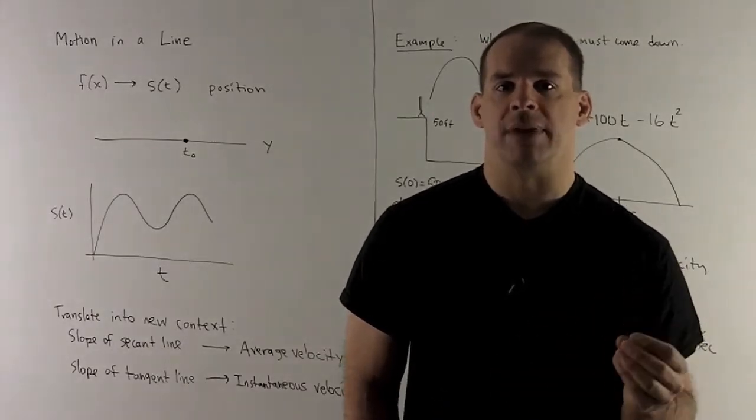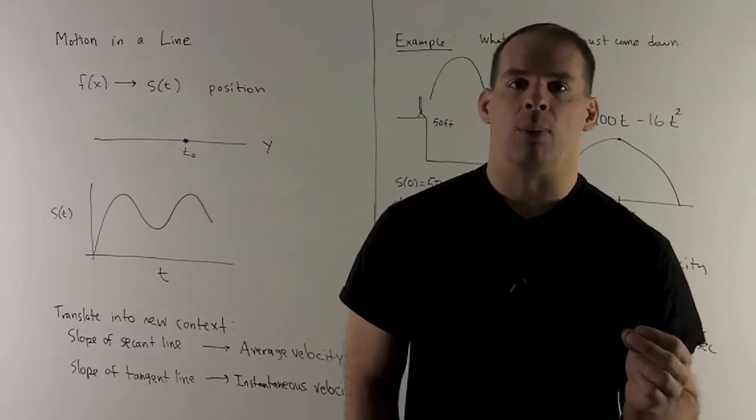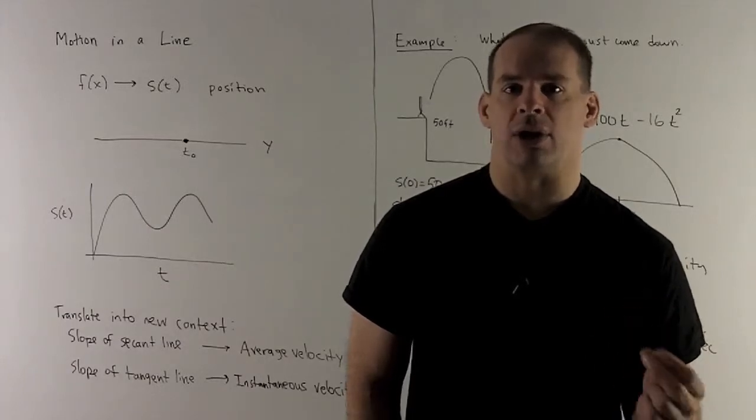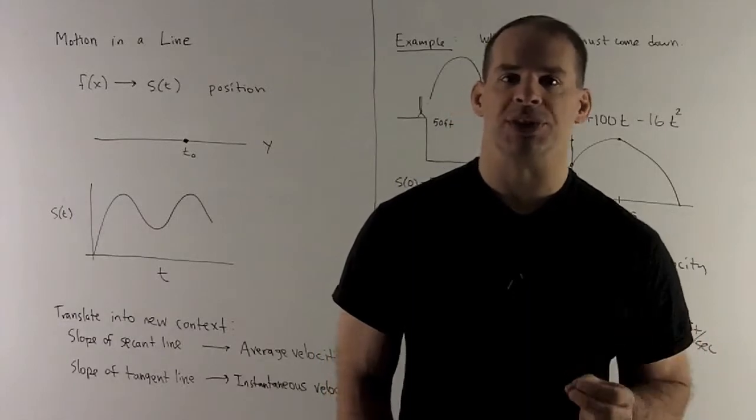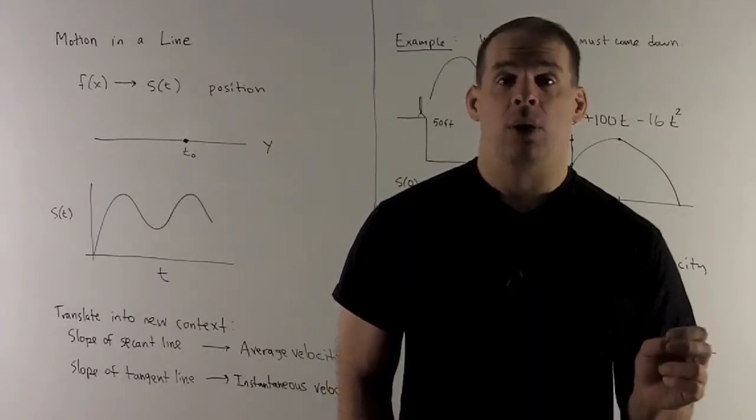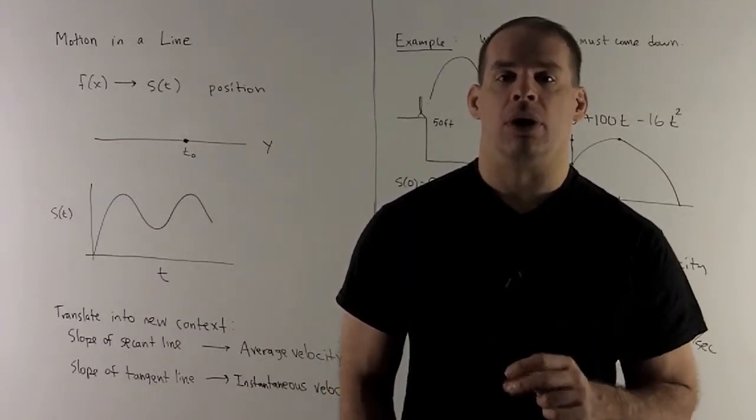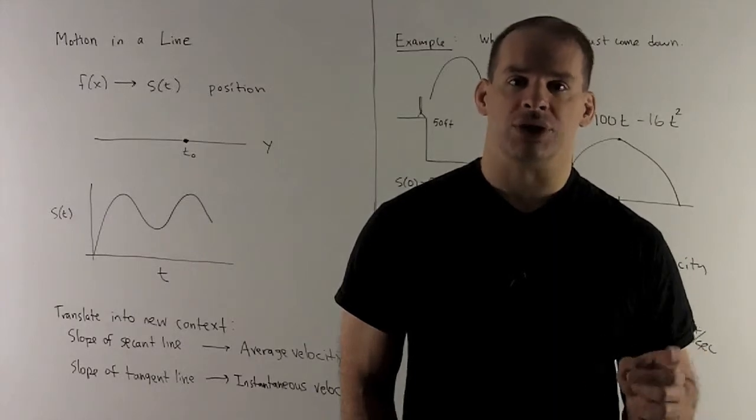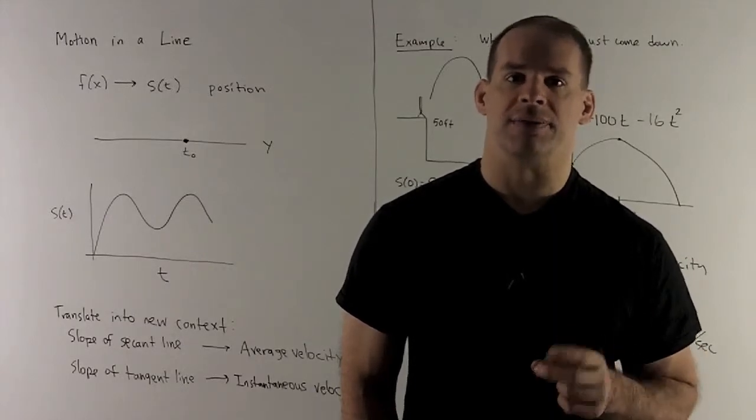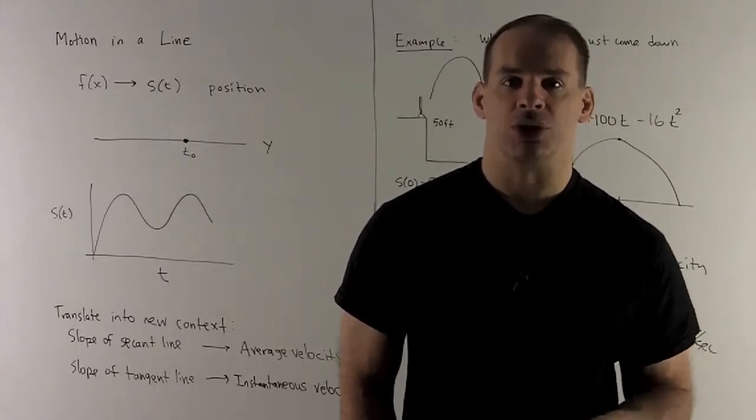So if I wanted to graph this, what would we do? Well, where we had the x-axis before, we're now going to call that the t-axis, and then the y-axis will stay as it is, and now we just plot points like we did before. A plot for your curve is just going to be t, s. So that's motion in a line.